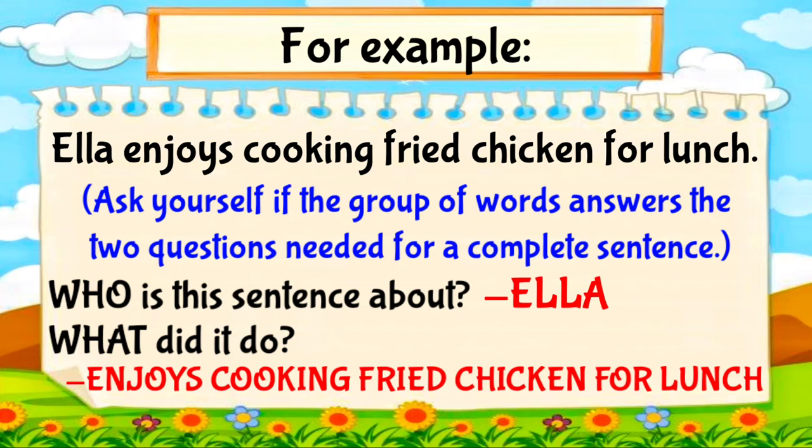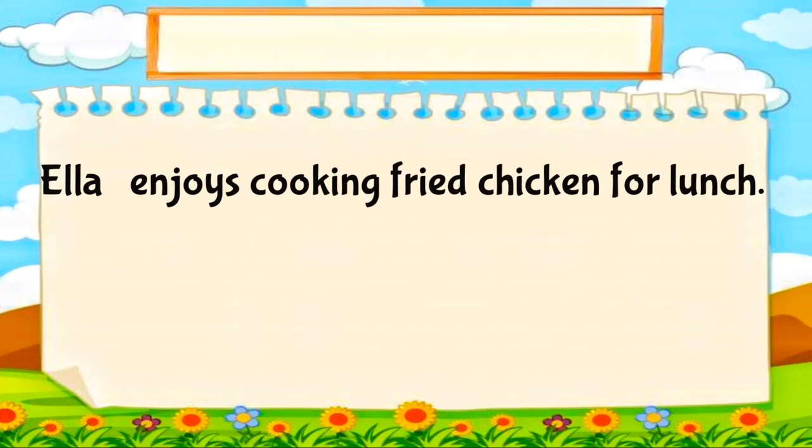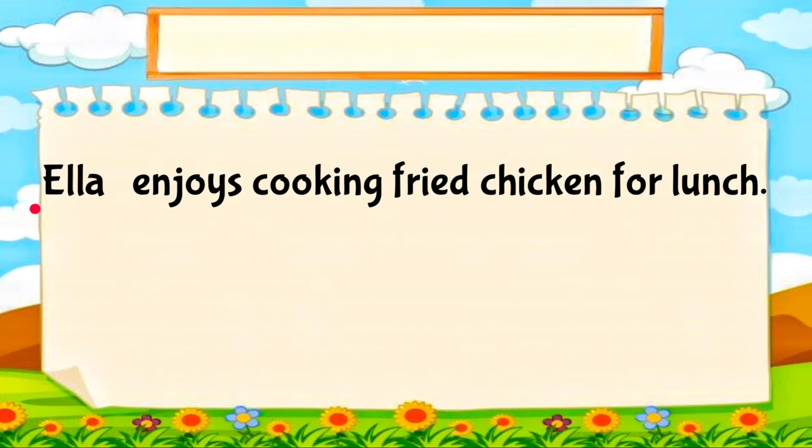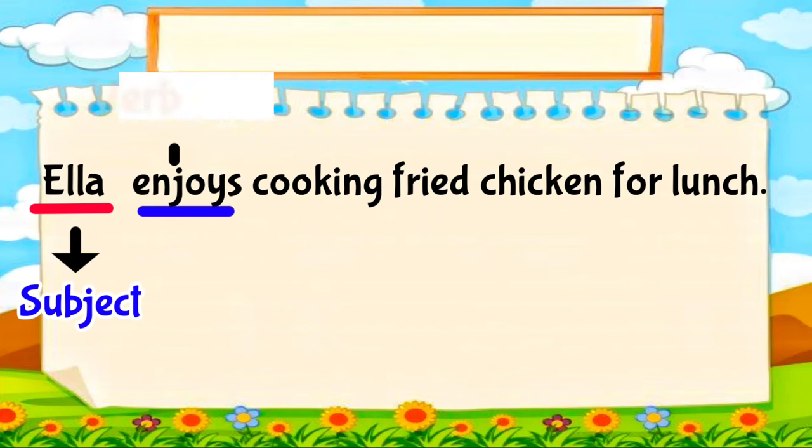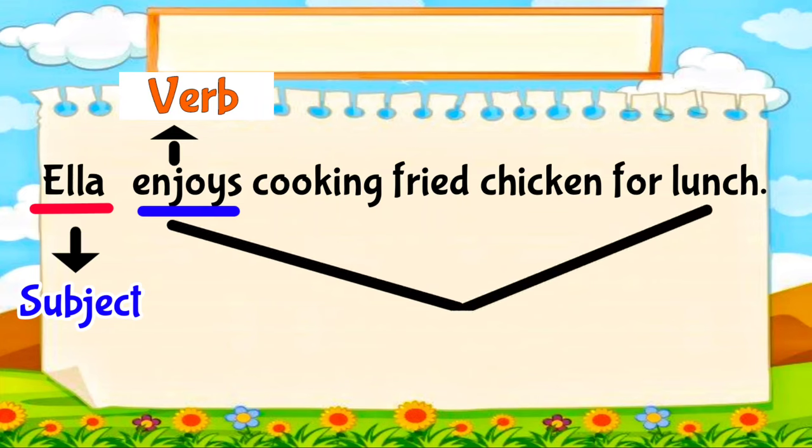What did it do? Enjoys cooking fried chicken for lunch. In the sentence Ella enjoys cooking fried chicken for lunch, the subject is Ella. Enjoys is the verb. Enjoys cooking fried chicken for lunch is the predicate.